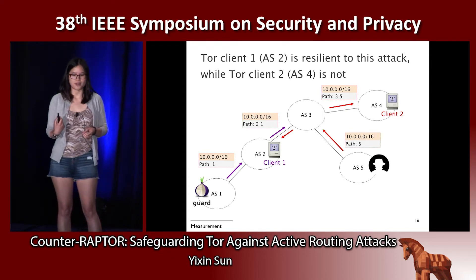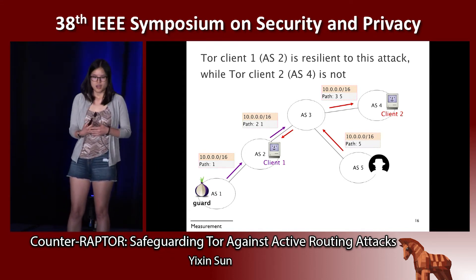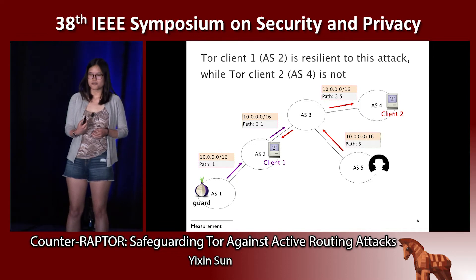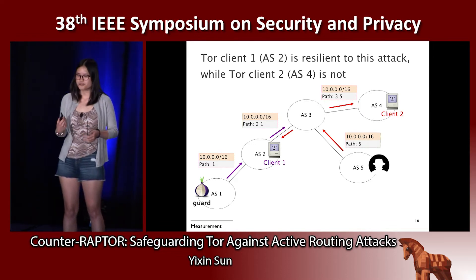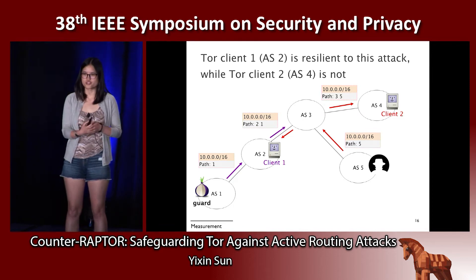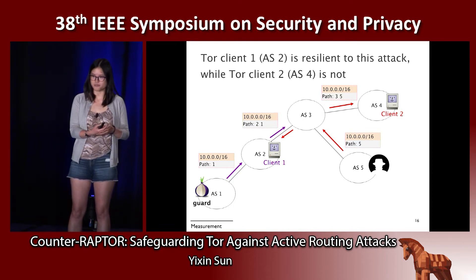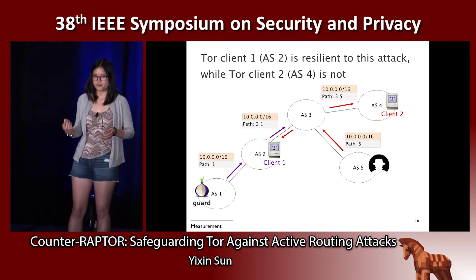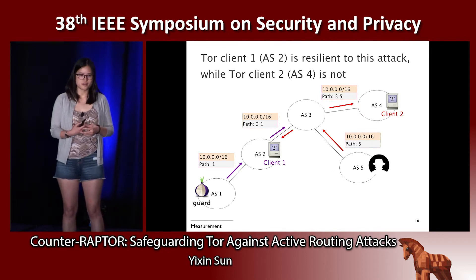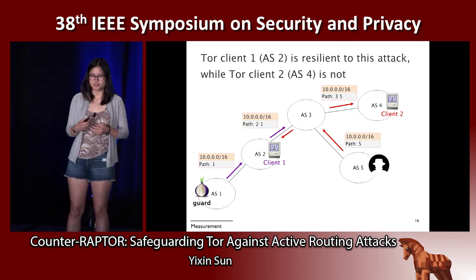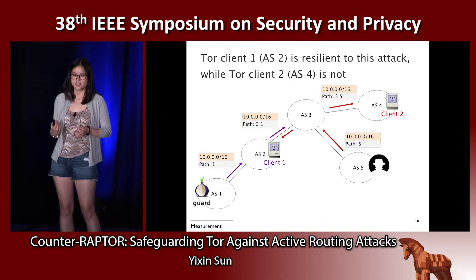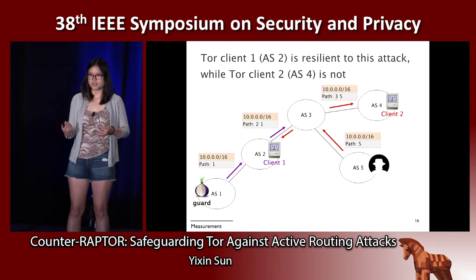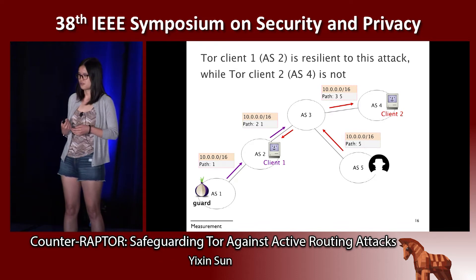At this point the traffic diverges on the internet. Tor client 1 in AS2 is resilient to this attack because AS2 still prefers the route to the true origin AS1, and sends traffic to the real guard relay. Whereas AS4, where Tor client 2 is, prefers the route to AS5, the attacker, instead of AS1. As a consequence, Tor client 2 is not resilient to this attack.